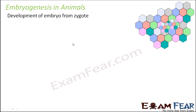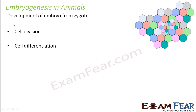The zygote, when it is formed initially, is a diploid cell and just one single cell. But after that, it undergoes a lot of division. So what are the processes that help the zygote to grow from a single cell to an embryo? They are cell division and cell differentiation.